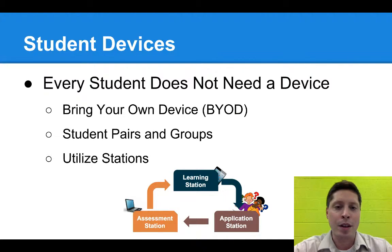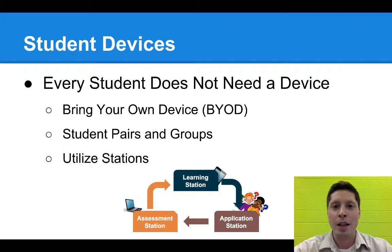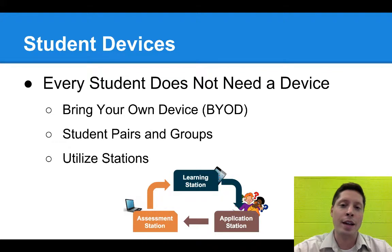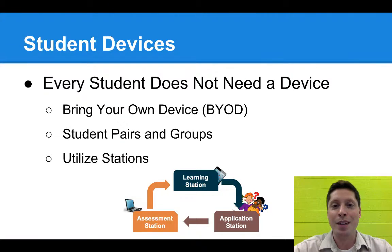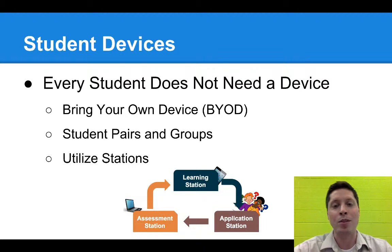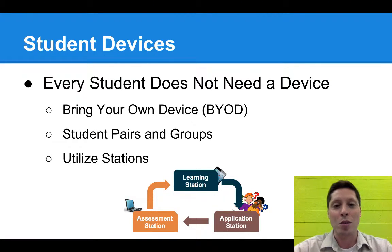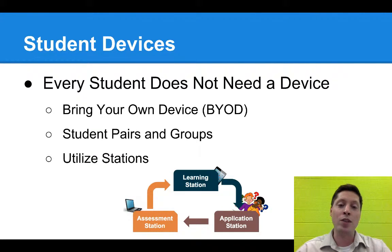Now I want to talk about student devices. Let's say that you want students to watch the videos in class. This doesn't mean that every single student has to have a device. There are different ways to structure your class to incorporate the videos with limited devices. One way is to implement a bring your own device, or BYOD, model. This means that if students have an iPod, iPad, laptop, or any device that can be used to watch these videos, have the students bring those devices to class. This might be a way to get closer to a one-to-one ratio where every student has a device.